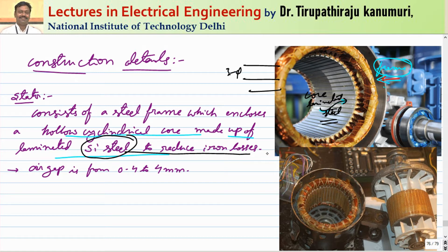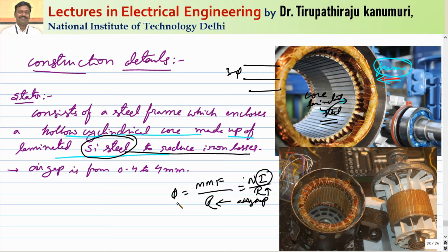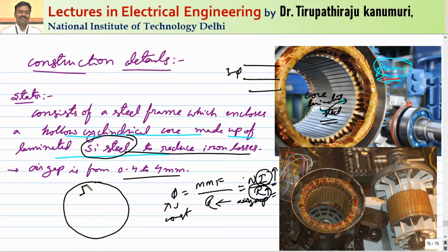The air gap between the stator and rotor should be as minimum as possible. Since flux equals MMF divided by reluctance, a larger air gap increases reluctance, which increases the magnetizing current required. That is why the air gap is maintained between 0.4 to 4 mm. The stator core has slots on its periphery, and in these slots the three-phase distributed winding is placed to produce the rotating magnetic field.